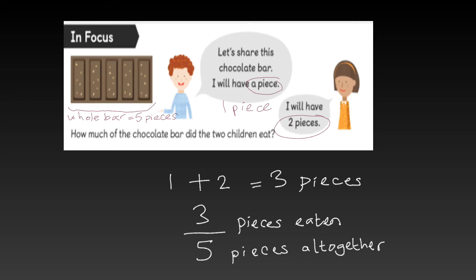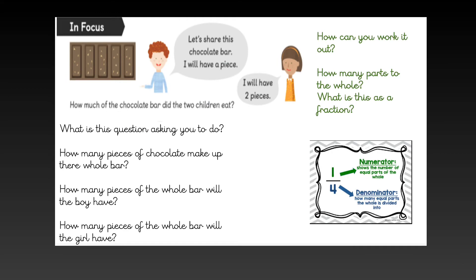So, if we add the one piece from the boy and the two pieces from the girl, we know one add two is equal to three. We can also put this into fraction form. So, the amount would be three over five because there were five pieces to begin with. Now, it's your turn. Read the questions carefully and have a go at answering them.